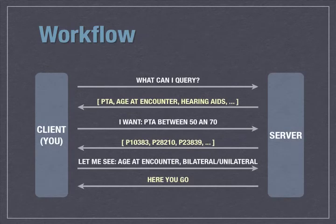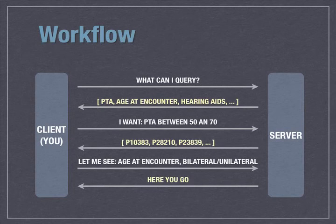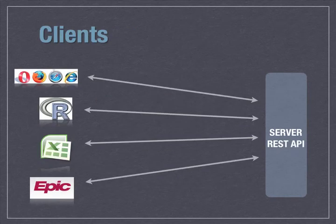The basic client-server workflow is simple: the browser client asks 'What can I query?' The server responds with the available items. The client then says 'I want this condition — PTA between 50 and 70,' the server returns the patient cohort, and then the client can request additional data, which the server sends back. This clean client-server relationship allows any type of client to communicate over the REST API.